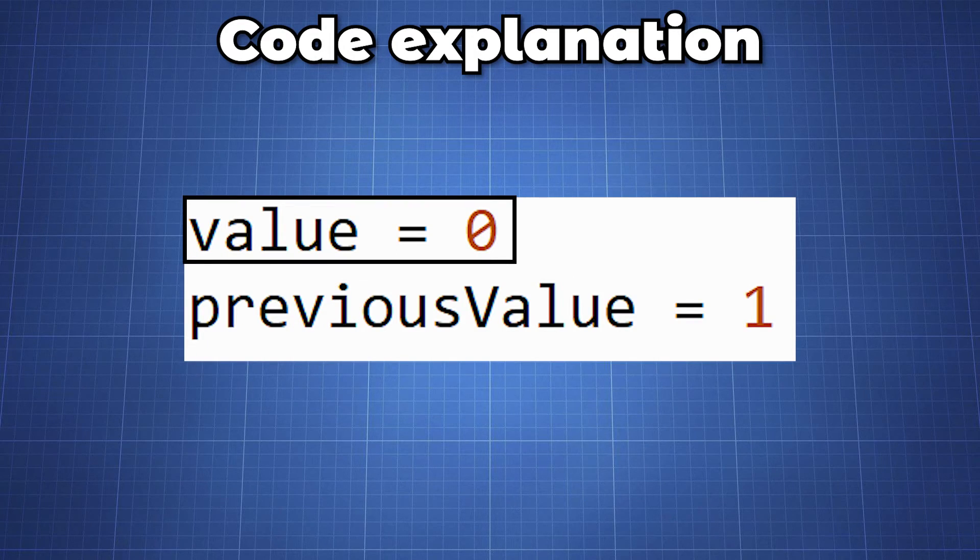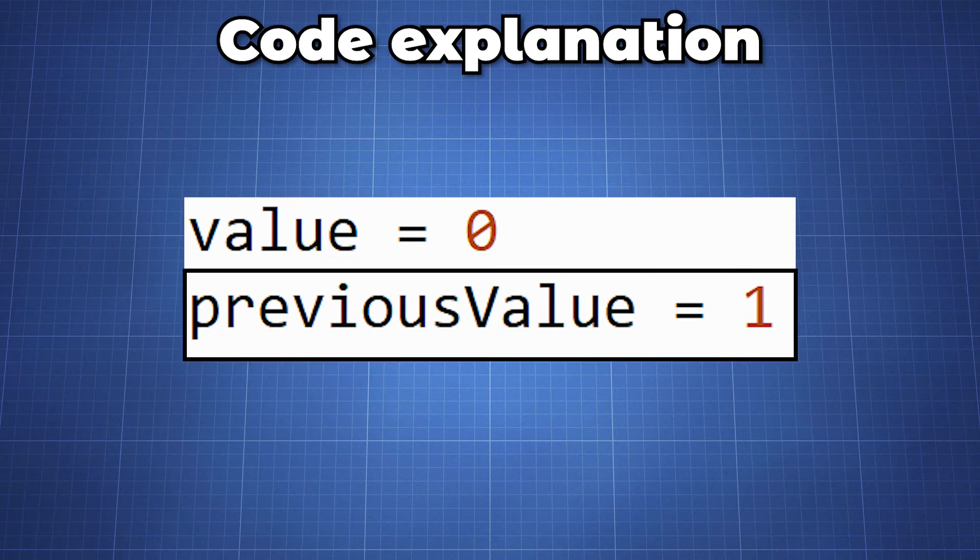We create a variable value to set the initial state of our encoder and previous values, which we set to high since both our CLK and DT pin will be high unless we turn the knob.